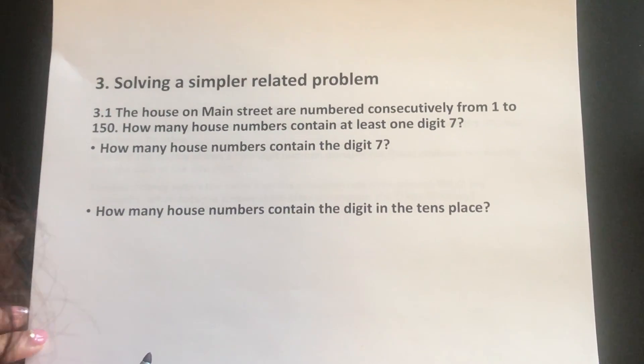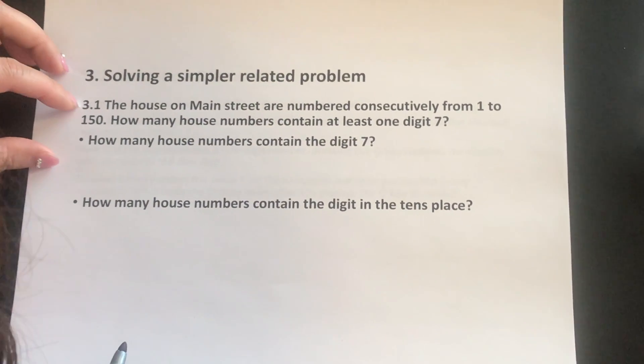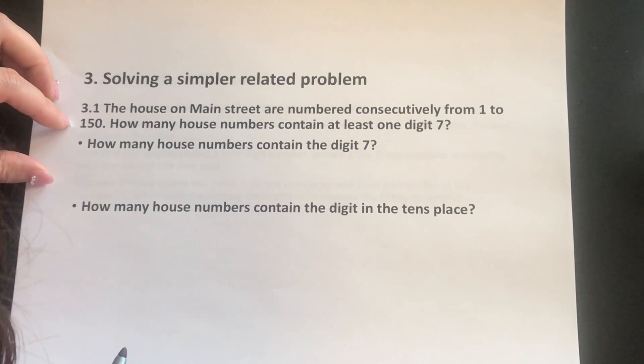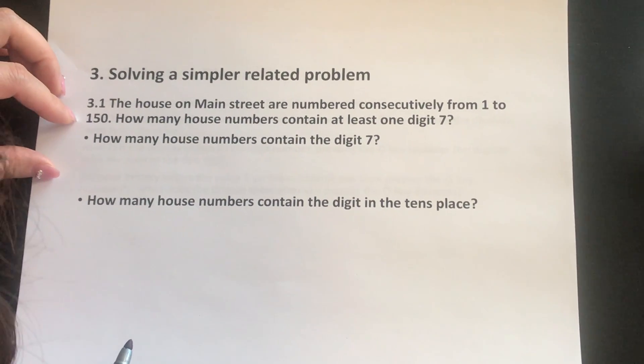Part 3, solving a simpler related problem. First question: the houses on Main Street are numbered consecutively from 1 to 150. How many house numbers contain at least one digit 7?